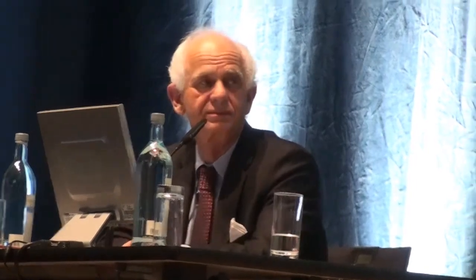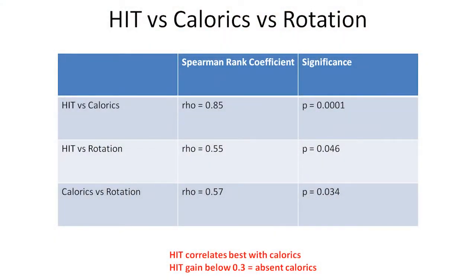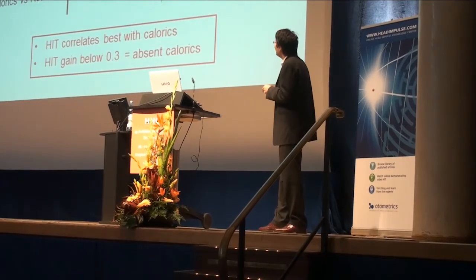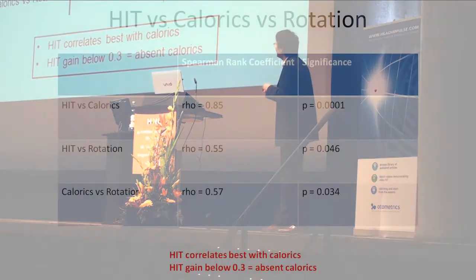Conrad, you've got some actual facts rather than opinions — maybe to back up Professor Halmagyi's statement with some numbers. This is about bilateral patients after gentamicin vestibulotoxicity. As you can see here, caloric correlates very well to the head impulse test, in this case still measured with scleral coils. As a rule of thumb, if you have a gain that's below 0.3 on both sides, calorics are usually absent.